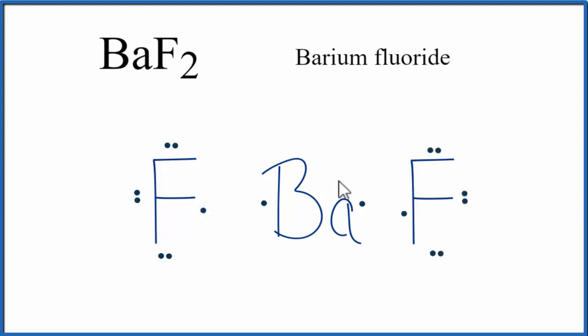So we said that in an ionic compound, the metal transfers valence electrons to the nonmetal. So the barium transfers one electron here, and that completes the octet on the fluorine. The other electron transfers to this fluorine, completing the octet on this fluorine.